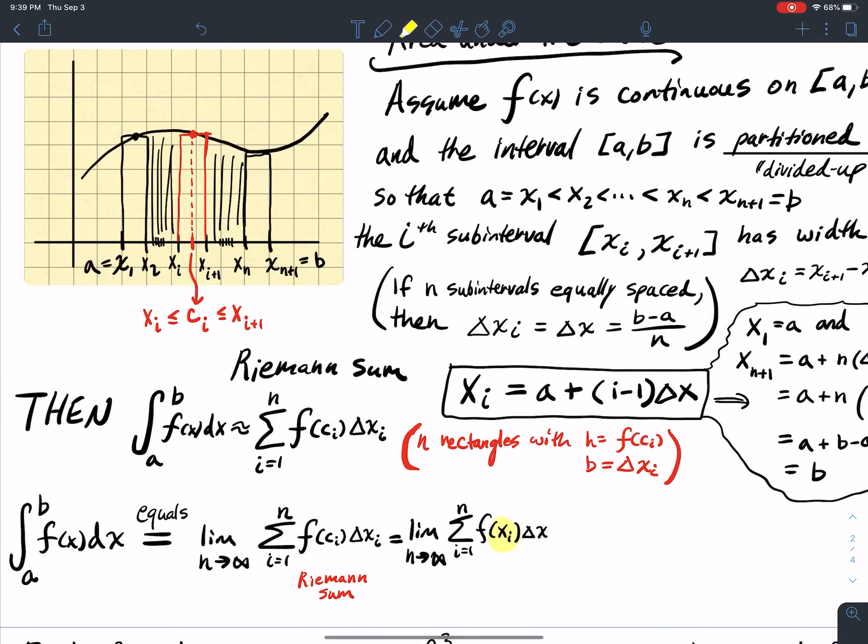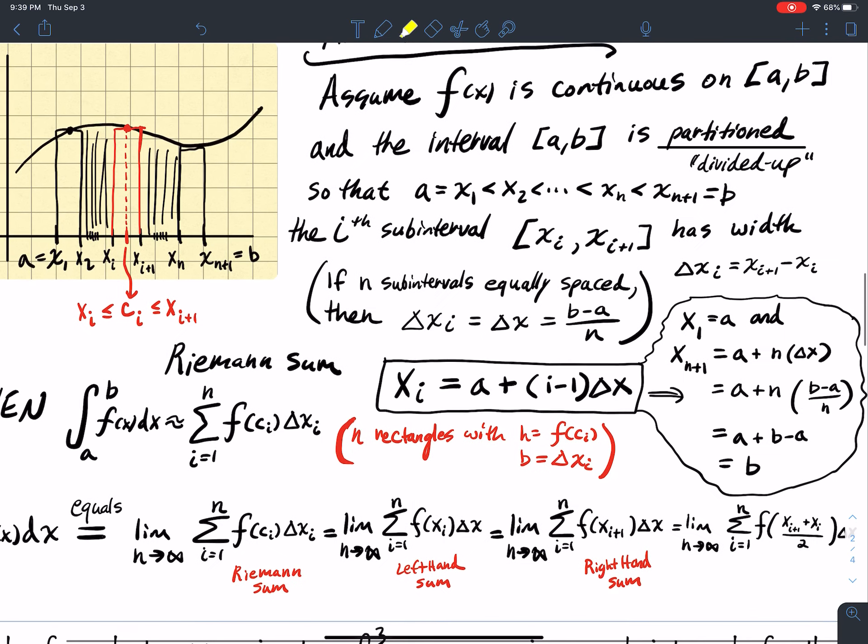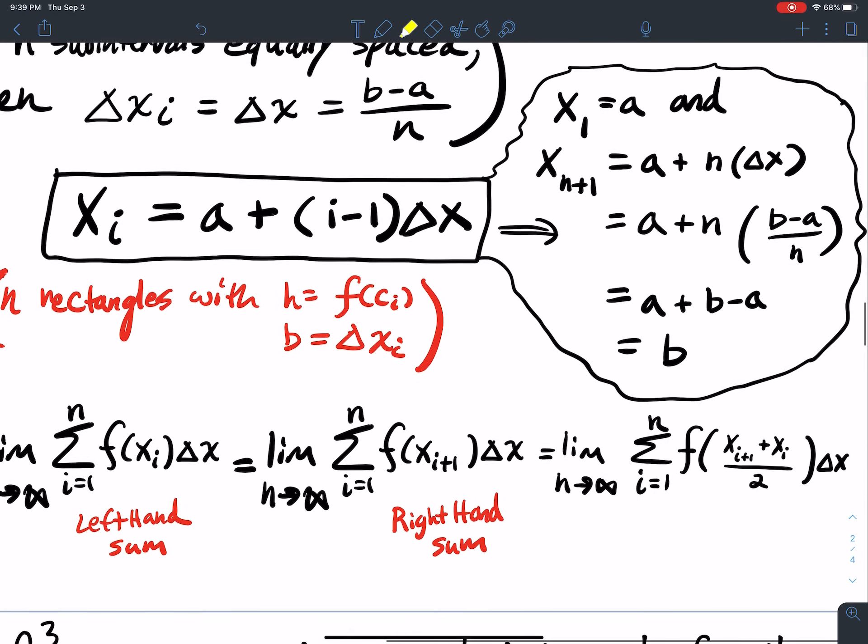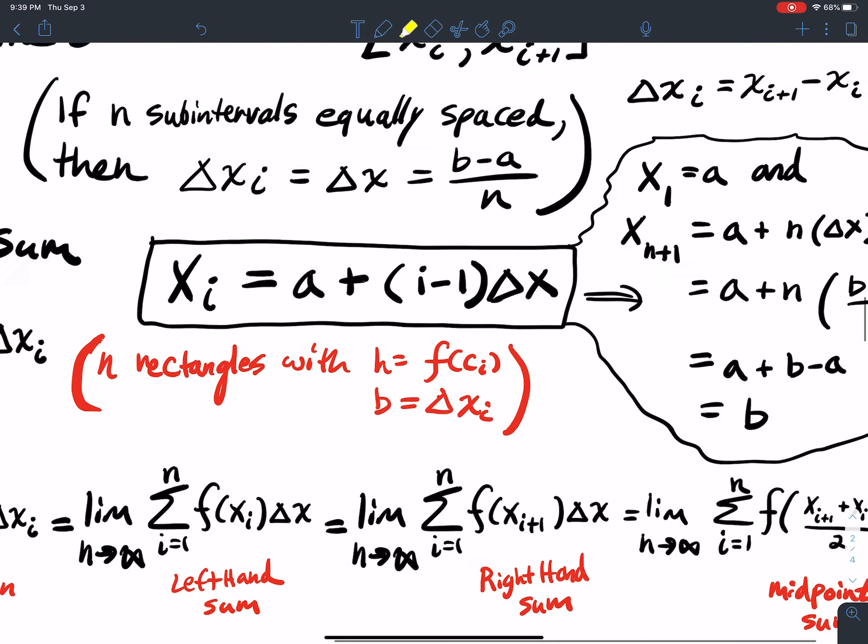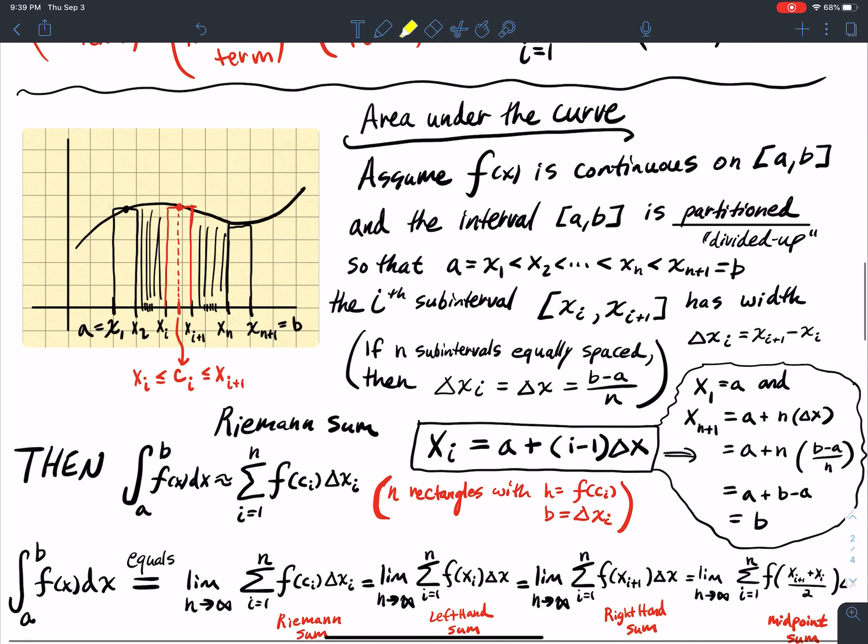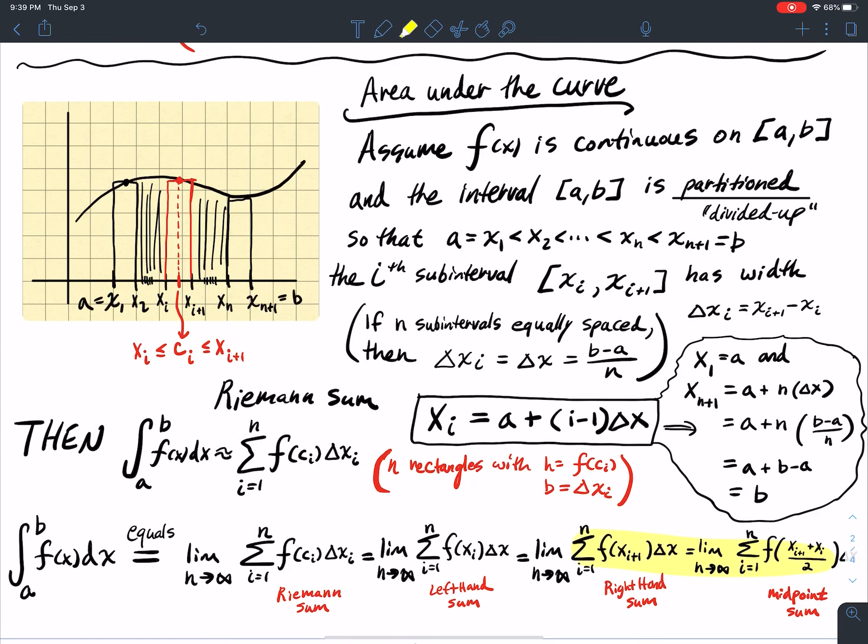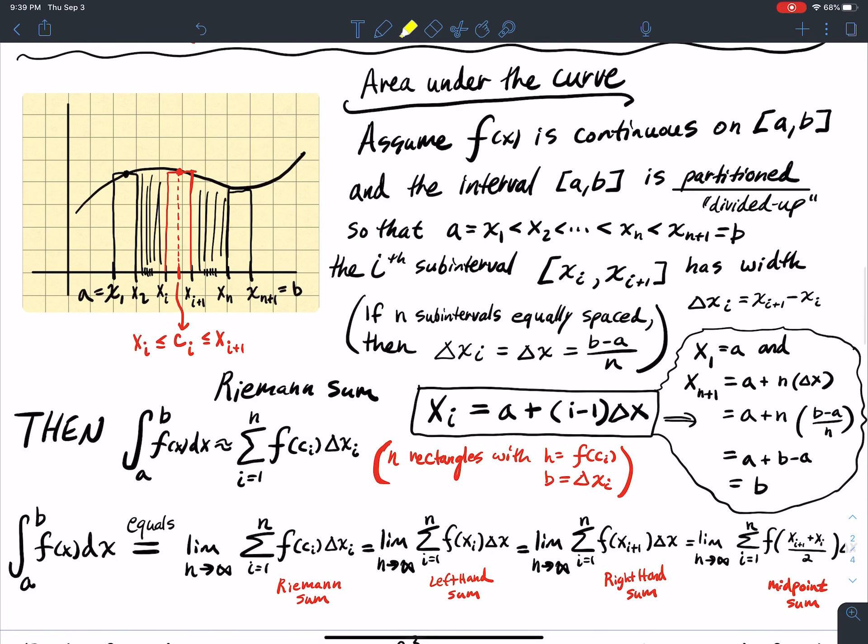This is the definition for the left-hand sum, it's equal as long as I push n out to infinity. This is the same definition, but it's for the right-hand sum, as long as I push n out to infinity, it's equal. This is the definition for the midpoint sum, as long as I push n out to infinity. So all these are equal to the Riemann sum, which is equal to the definite integral from a to b of f of x dx. So once again, this is the theory behind why integration works.